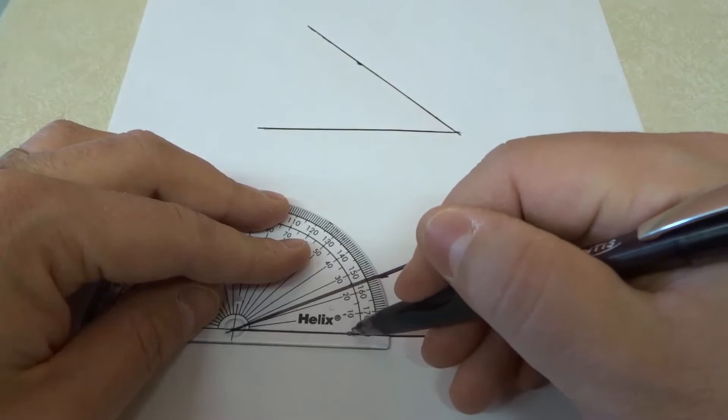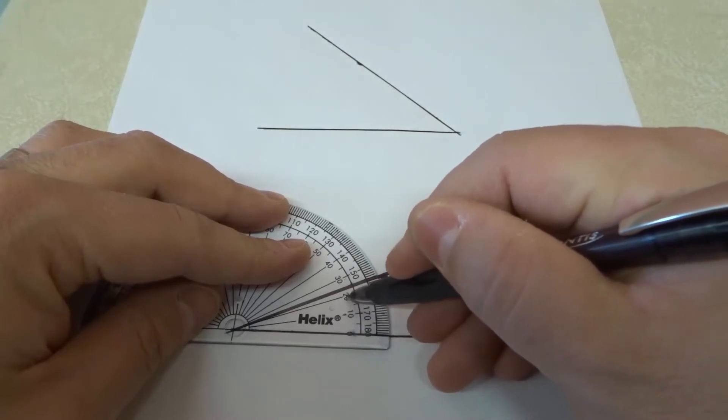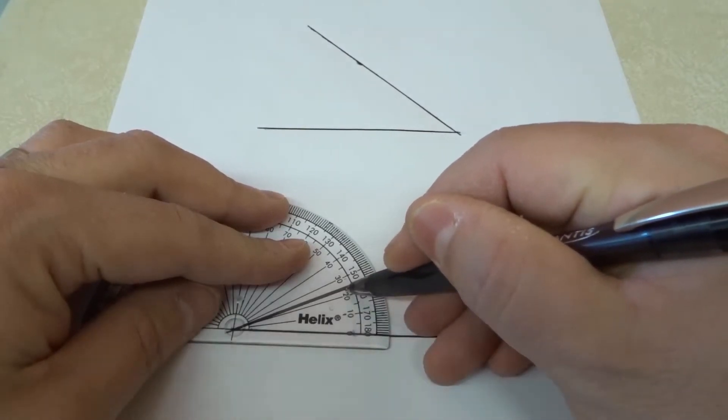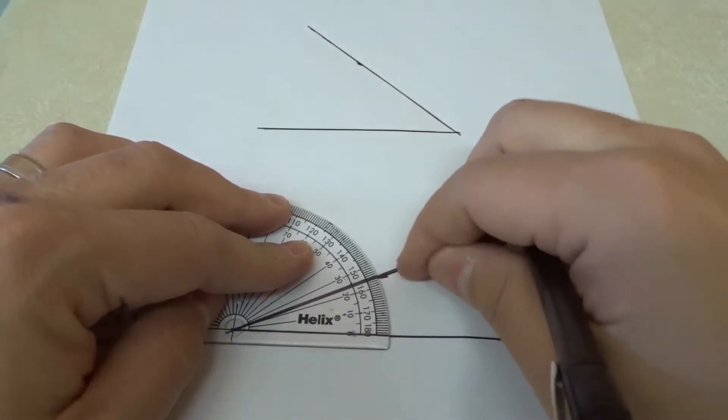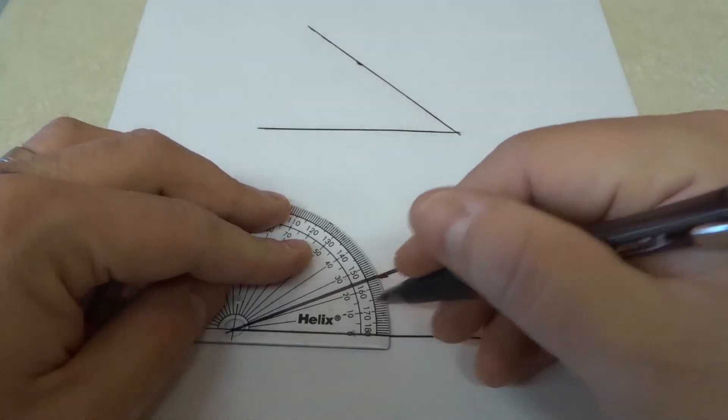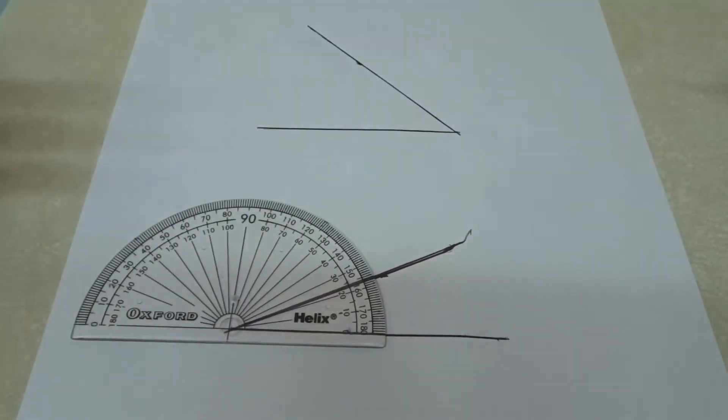So this angle right here, if you start at zero, 10, 20, and then it's halfway to 30. So it's about 25 degrees. And you can use the outer lines as a guideline as well for the little increments. Okay, so this angle is actually 25 degrees, very simple.